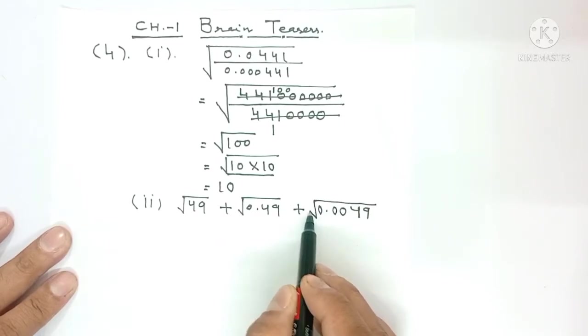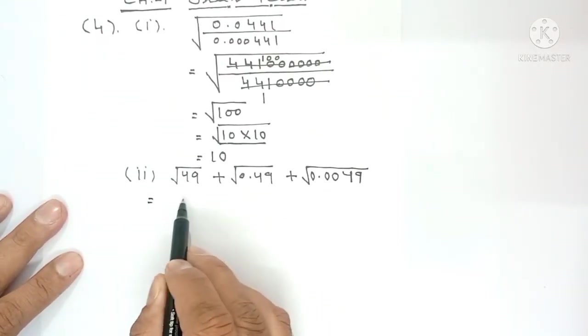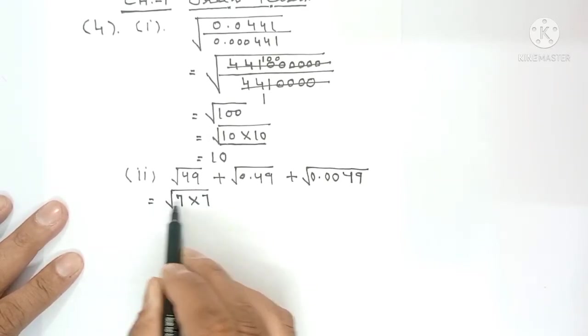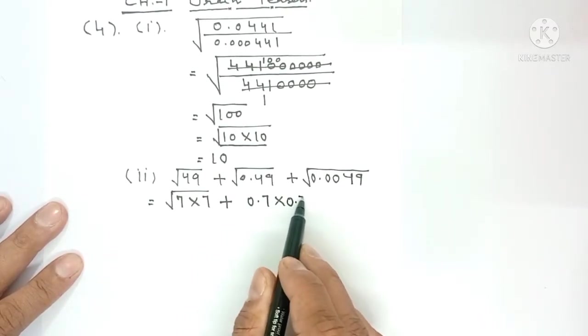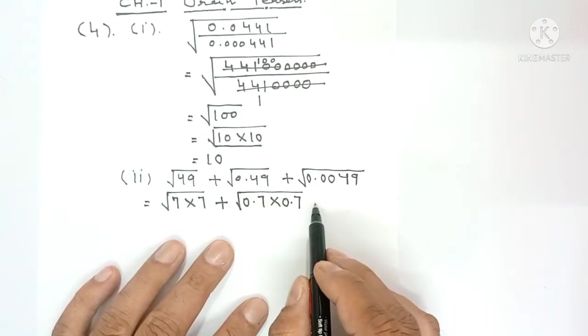Now you need to find the value. 49 equals 7 times 7, so write that. Plus 0.49 equals 0.7 times 0.7, write that under the root as well.